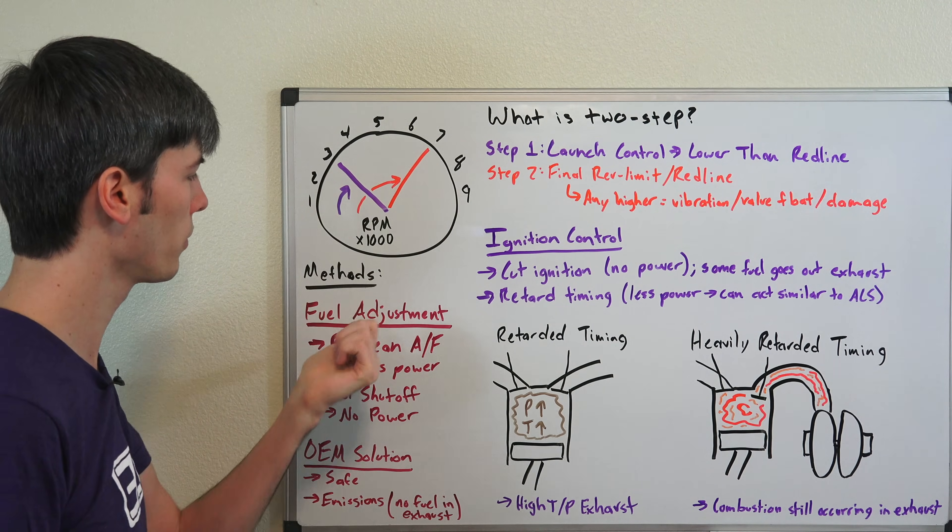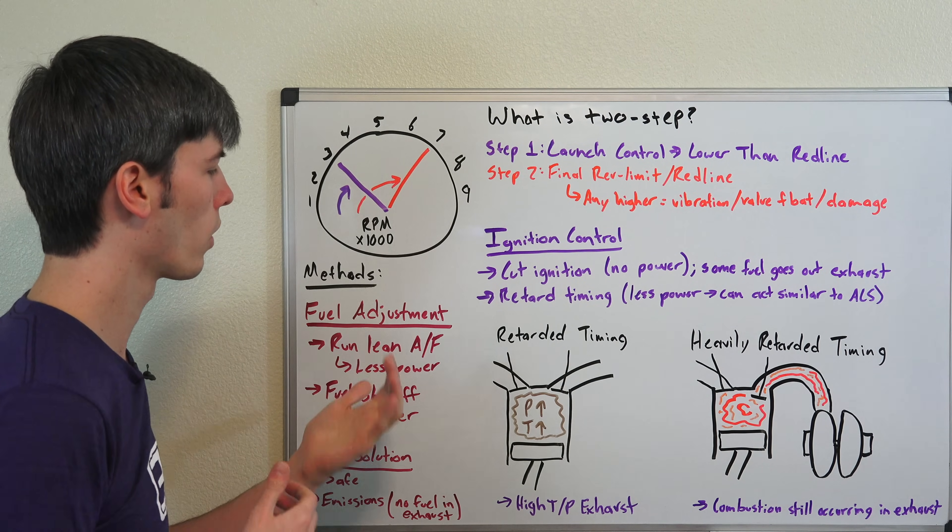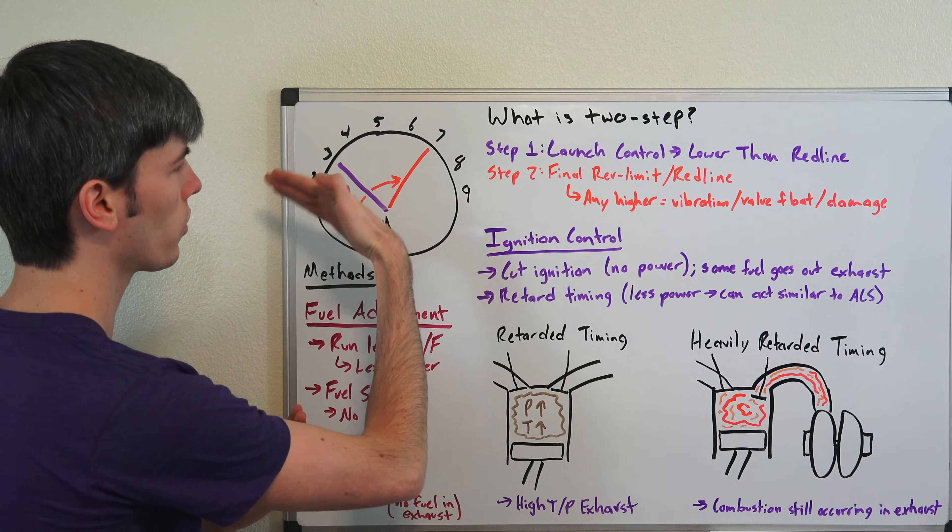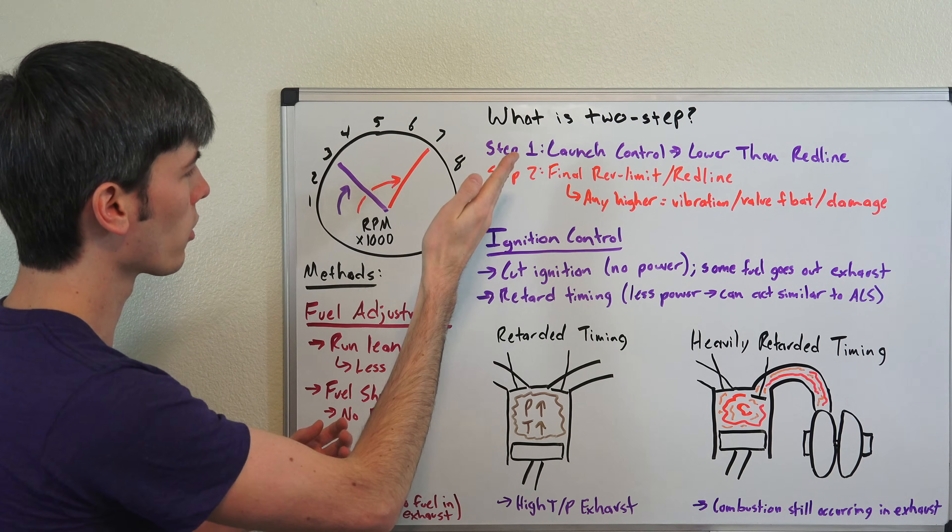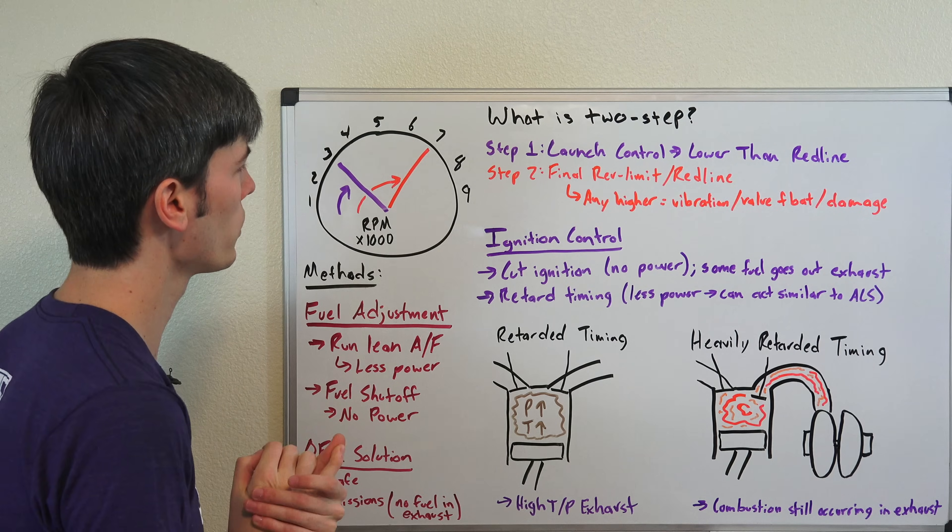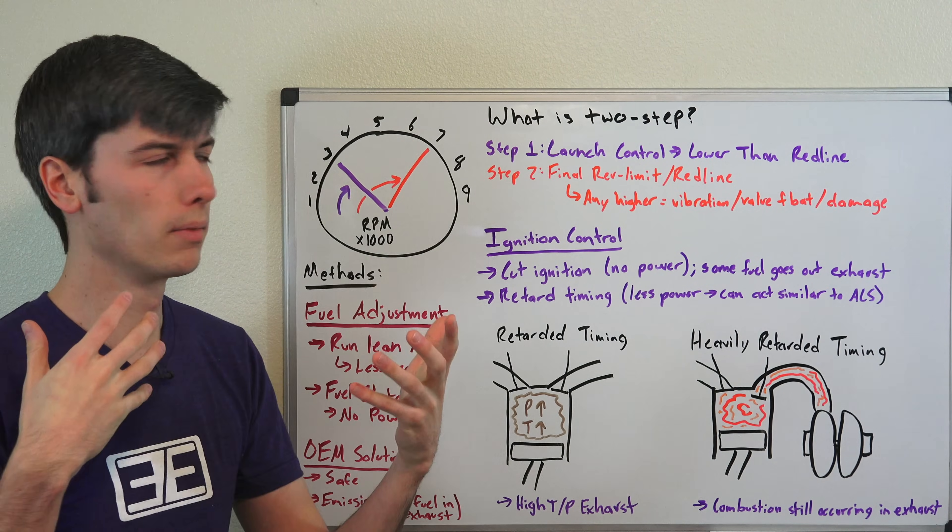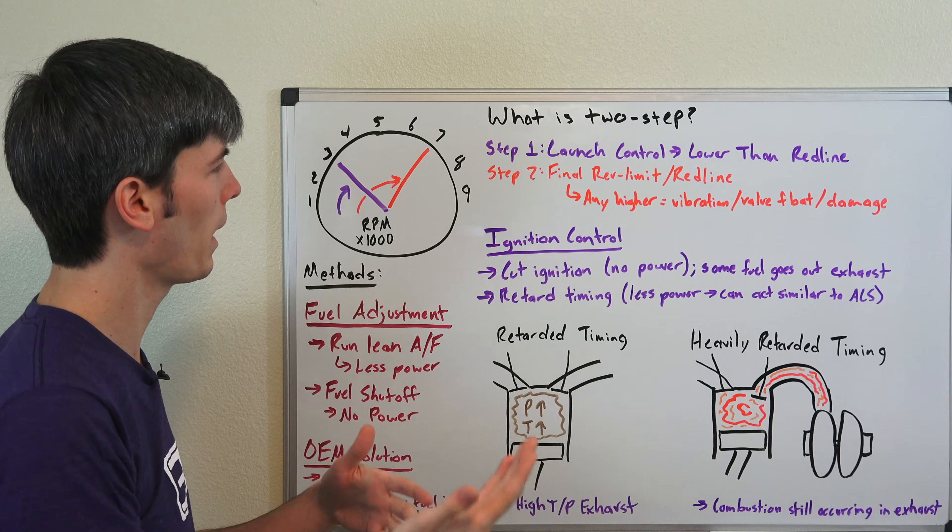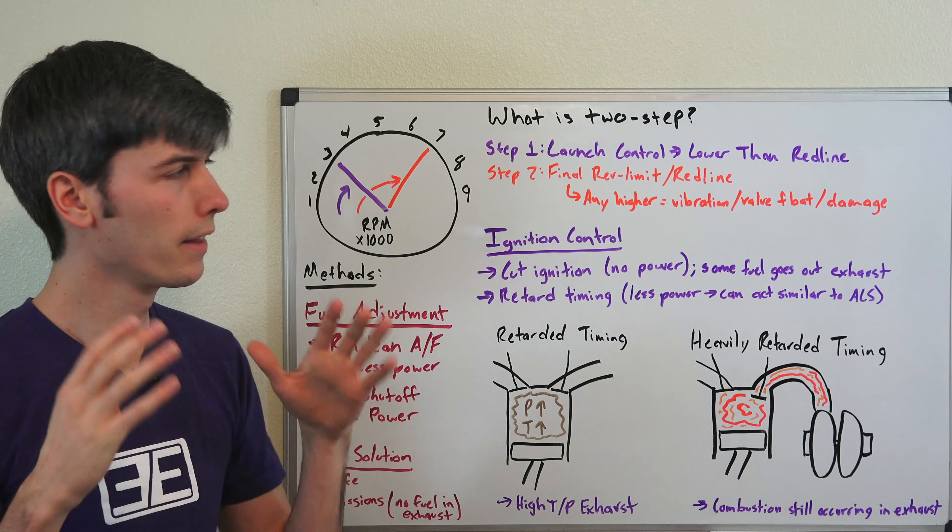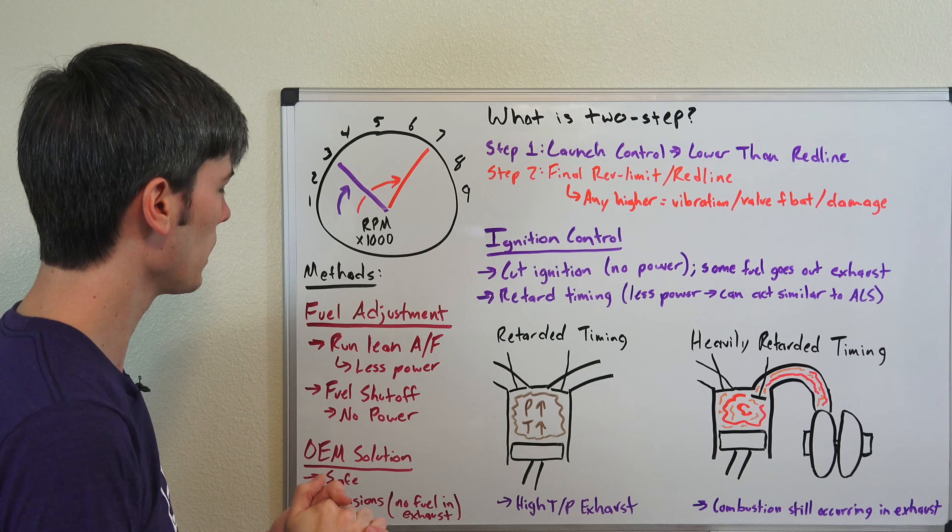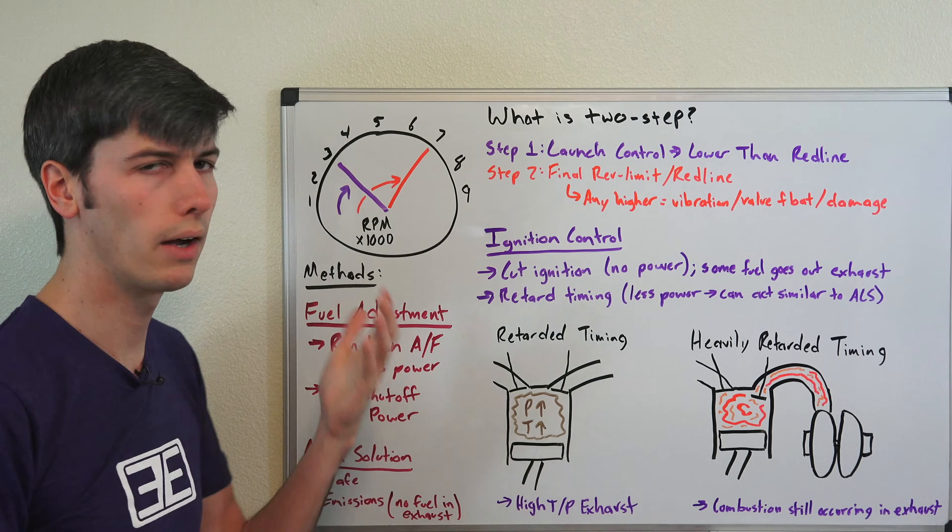They're going to be using these because it's a safer thing to do and also because it's better for emissions. So when you have a fuel adjustment, there's two different ways this could work. You could run a lean air fuel mixture, so once you start to get to red line there and you want to stop the engine from increasing, you can lean out the air fuel ratio and that's going to be less fuel, which means you're going to make less power. So it's going to prevent it, it's going to start to slow it down from increasing in rpm.